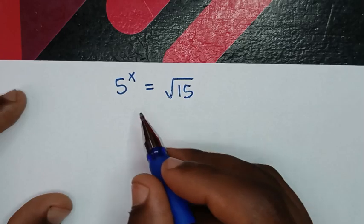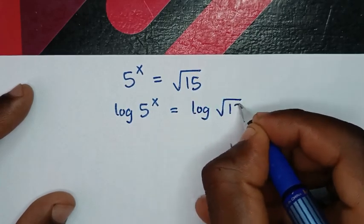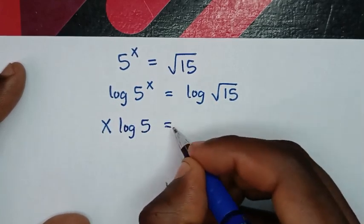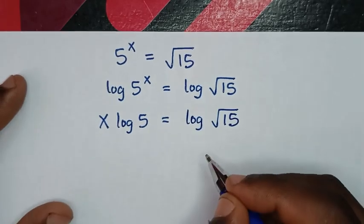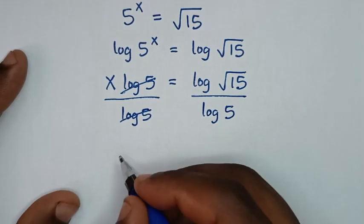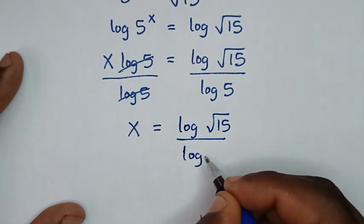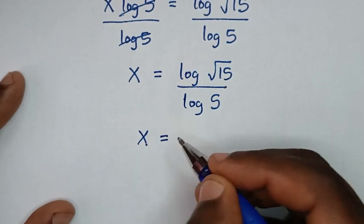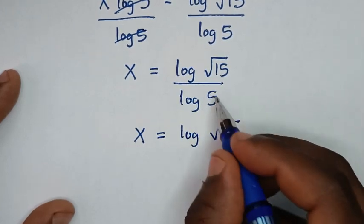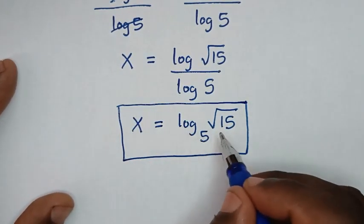From the second solution, 5 power of x equals positive square root of 15. To get x, we apply log to both sides: log of 5 power of x equals log of square root of 15. The power x moves to the front: x times log of 5 equals log of square root of 15. Dividing both sides by log of 5, x equals log of square root of 15 over log of 5, which is the same as log base 5 of square root of 15. This is our final answer.